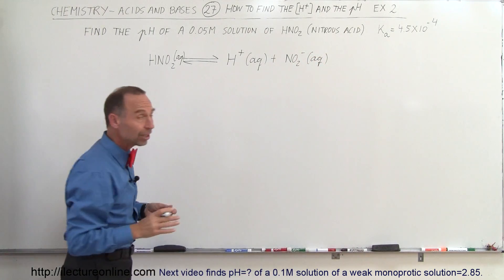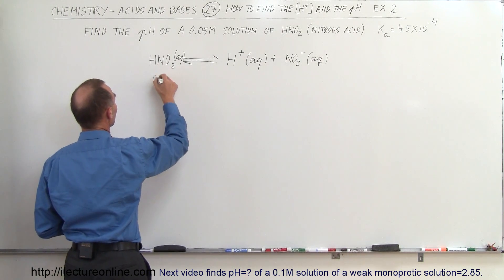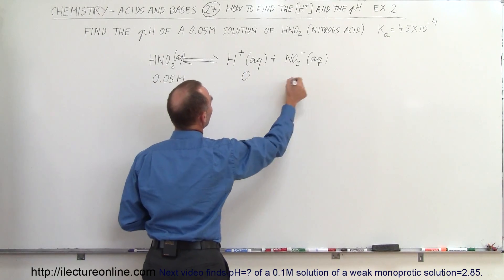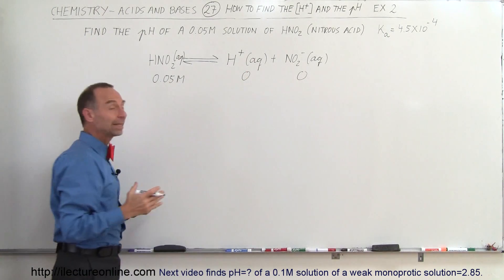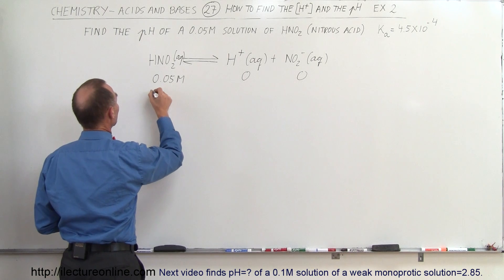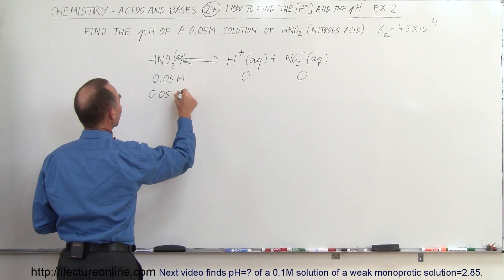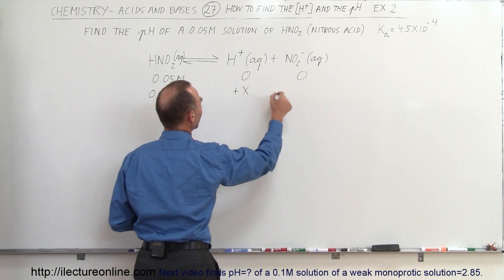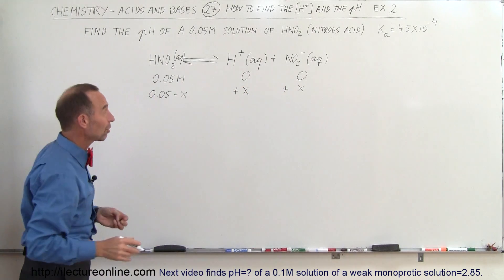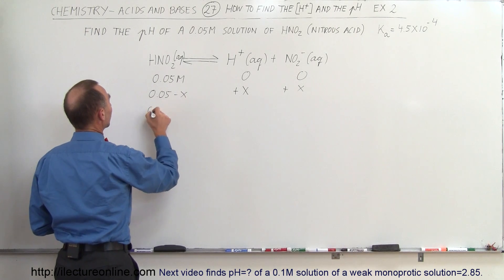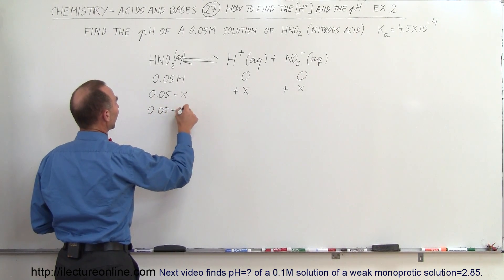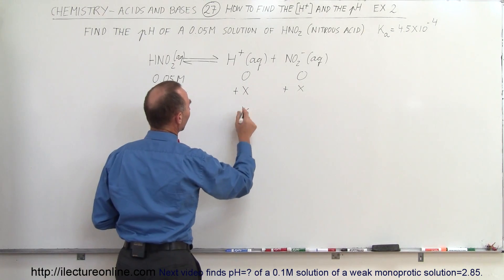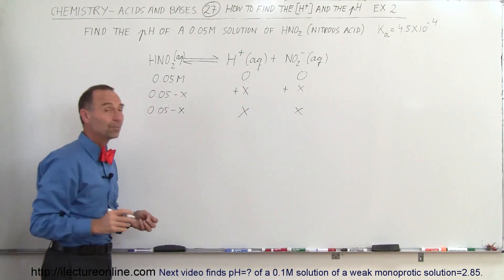Originally, we started out with a 0.05 molar solution for HNO₂, and 0 and 0 for the products. There's going to be some reduction in concentration, so 0.05 minus X. Whatever this reduces by, the products will increase by that amount. The final equilibrium concentrations are 0.05 minus X for nitrous acid, and X for the hydrogen ion and the conjugate base.